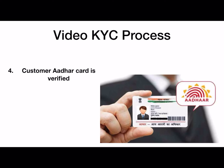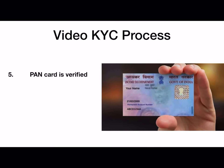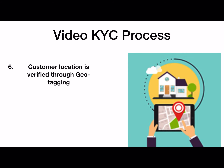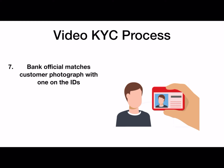The customer's Aadhaar card is then verified — this is done through Aadhaar authentication for banks and offline for other entities. The bank official asks the customer to display their PAN card, whose image is captured and authenticated. The official also verifies the customer's real-time location using geotagging software.